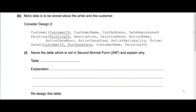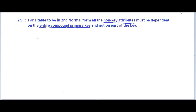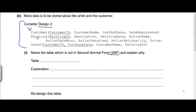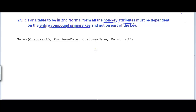More data is to be stored about the artist and customer, and the database has been redesigned. The question asks to name the table which is not in second normal form. For a table to be in second normal form, all non-key attributes must be dependent on the entire compound primary key, not just part of it. In this design, the only table with a compound primary key is the sales table, so let's check if it is in second normal form.